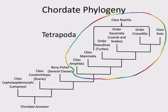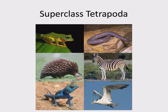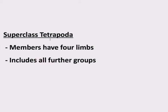This is called a superclass, but it's just a clade. This superclass is called Tetrapoda — that's amphibians, mammals, birds, and reptiles, all sharing the common ancestor with four limbs. Tetrapoda means four feet. Superclass Tetrapoda members have four limbs, and this is going to include all further groups in this chapter.